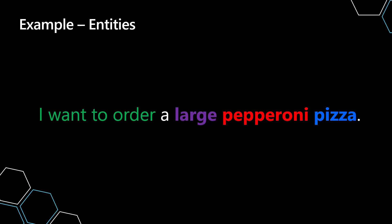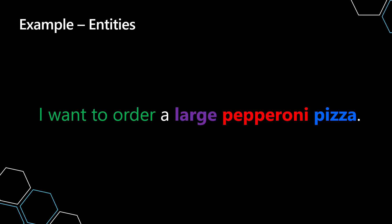You'll notice here that I have highlighted some words in different colors: large, pepperoni, and pizza. Each of these are additional pieces of information. If you said 'I want to order something,' someone would ask, 'Well, what do you want to order?' Pizza is the answer — that's an entity. Then they'd ask, 'What do you want on your pizza?' — pepperoni, yet another entity. And then, 'What size would you want?' — large. And then you have the complete information of what you want to order.